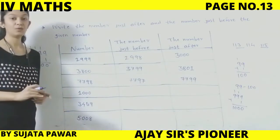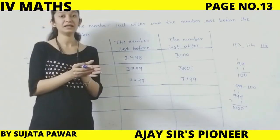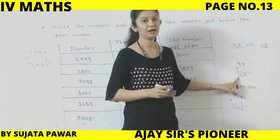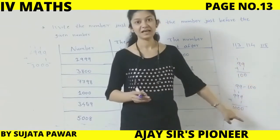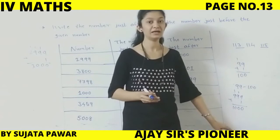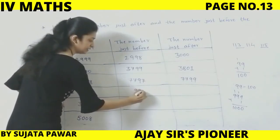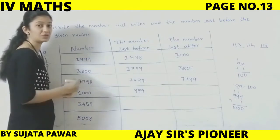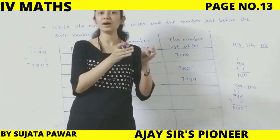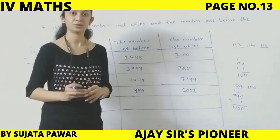Next: 1,000. 1,000 before — kaun se number ke baad 1000 aata hai? Jaise maine bataya: 99 after 100, and 999 after 1000. Humne 999 mein 1 number add karne ke baad 1000 mila. So 1000 before is 999, and 1000 after is 1001. Like 100 after 101, so 1000 after 1001. 1 is in the unit's place.